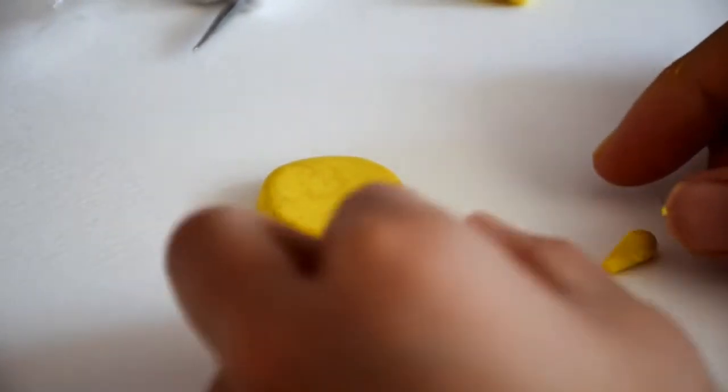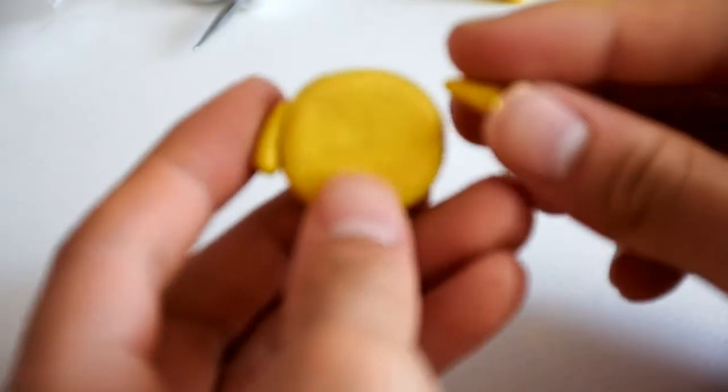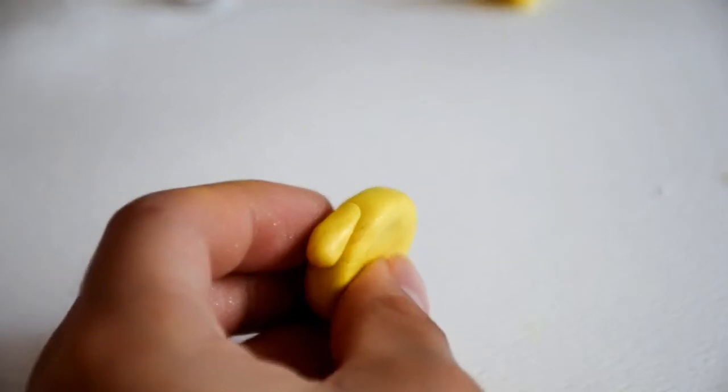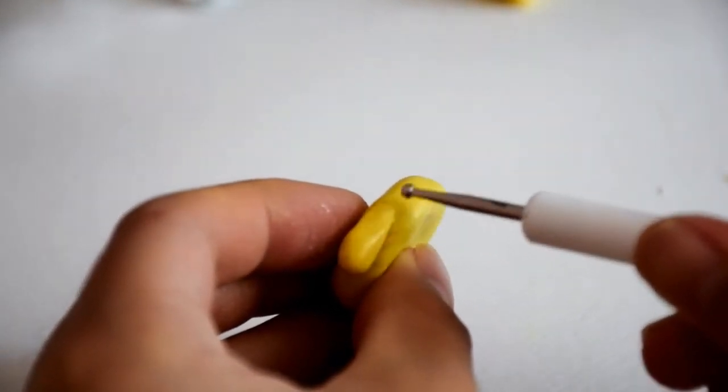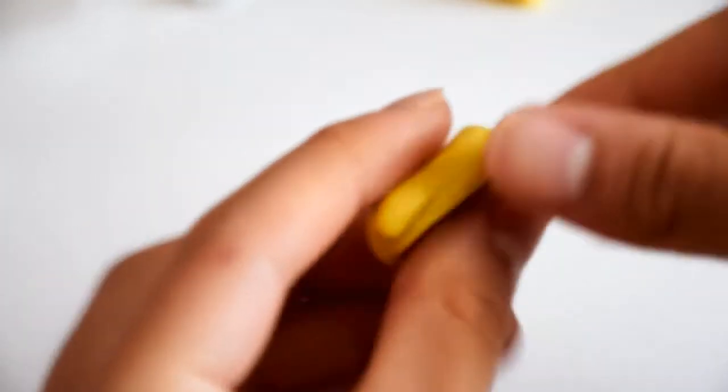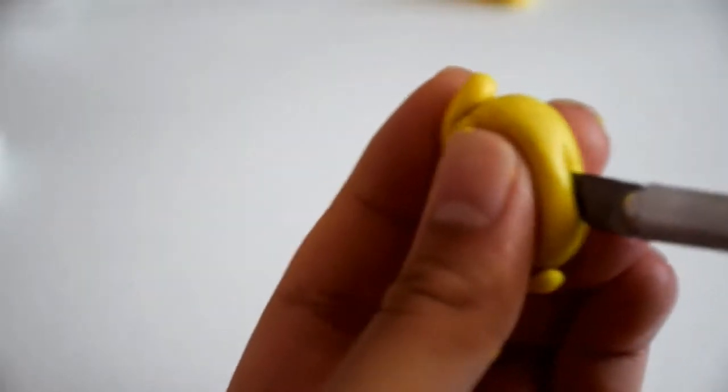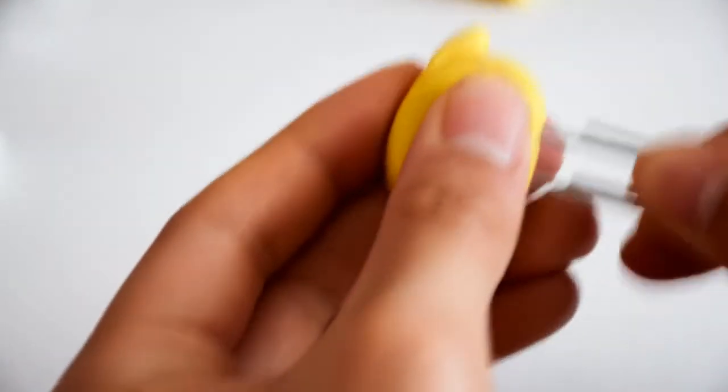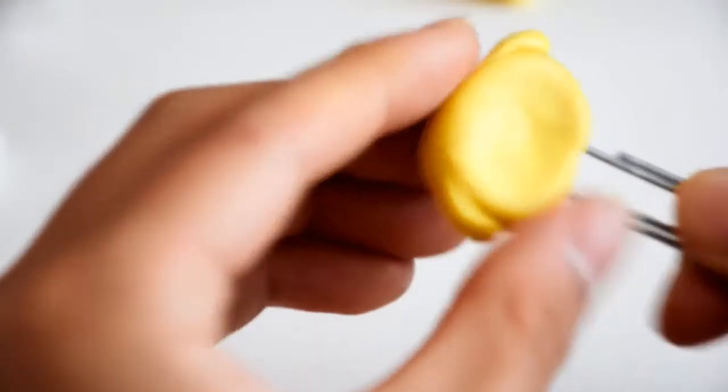So you're gonna take a piece of yellow clay, and you're gonna take two pieces of small yellow teardrop shaped polymer clay, and you're gonna blend that on for his ears. And I'm cutting again at the bottom and sticking a paper clip inside his head.